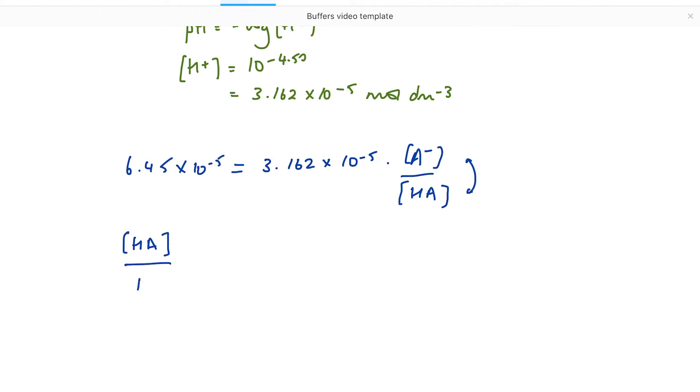So HA over A- is equal to 3.162 times 10 to the minus 5 divided by 6.45 times 10 to the minus 5. And that equals 0.5.